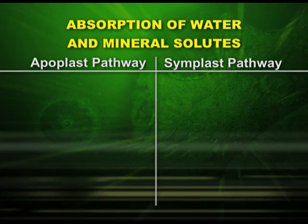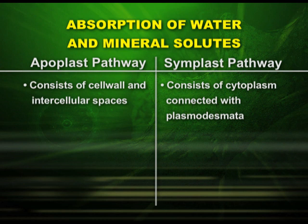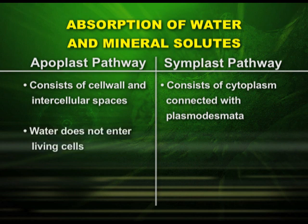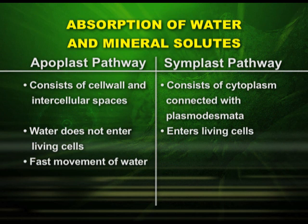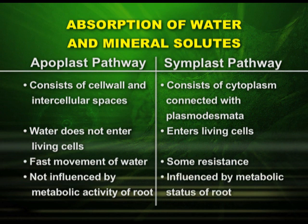In the apoplast pathway, it consists of cell wall and intercellular spaces. In the symplast pathway, it consists of cytoplasm connected with plasmodesmata. In apoplast, water does not enter living cells; in symplast, it enters living cells. In apoplast there is fast movement of water molecules; in symplast there is some resistance. The apoplast pathway is not influenced by the metabolic activity of the root, whereas the symplast pathway is influenced by the metabolic status of the root.